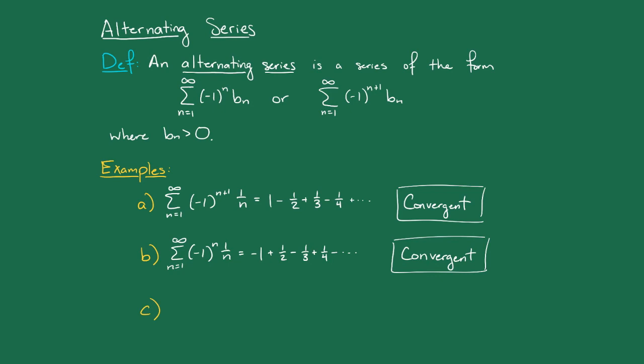As a final example, consider the series sum of minus 1 to the n plus 1, times n over 2n plus 1. This series is certainly alternating because of the minus 1 to the n plus 1, but does it converge?